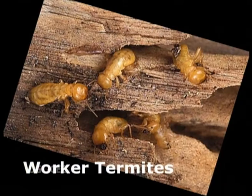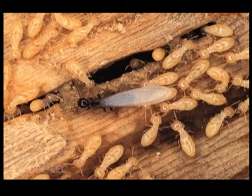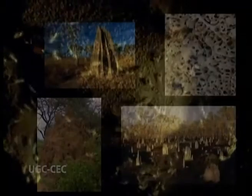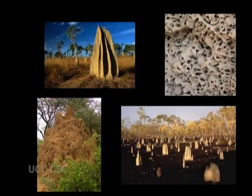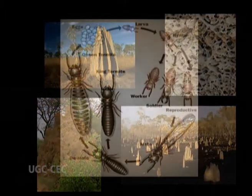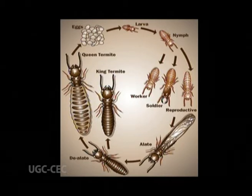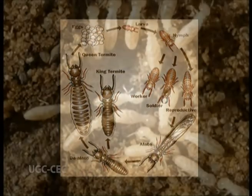Workers. The worker caste is the largest group. It consists entirely of immature, soft-bodied, wingless individuals which perform all of the hard labor in the colony. They clean, maintain and repair the nest, gather food and water, care for the young, and construct new tunnels and galleries as the colony grows. All these juveniles have the genetic capacity to undergo additional molts and become soldiers or reproductives, but most will spend their entire lives as workers.